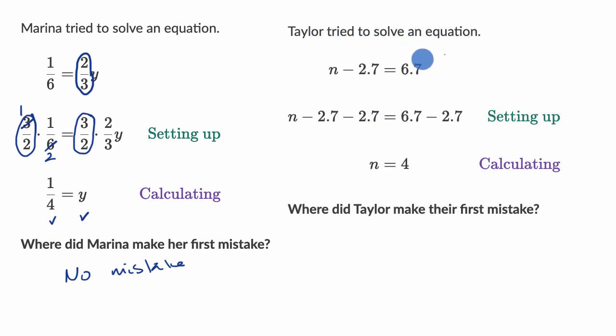So here, Taylor is trying to solve an equation. And so where did Taylor first get tripped up? N minus 2.7 is equal to 6.7.